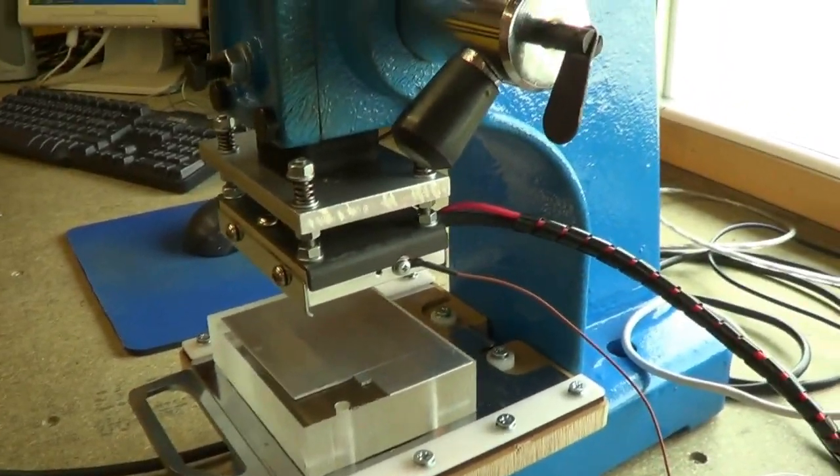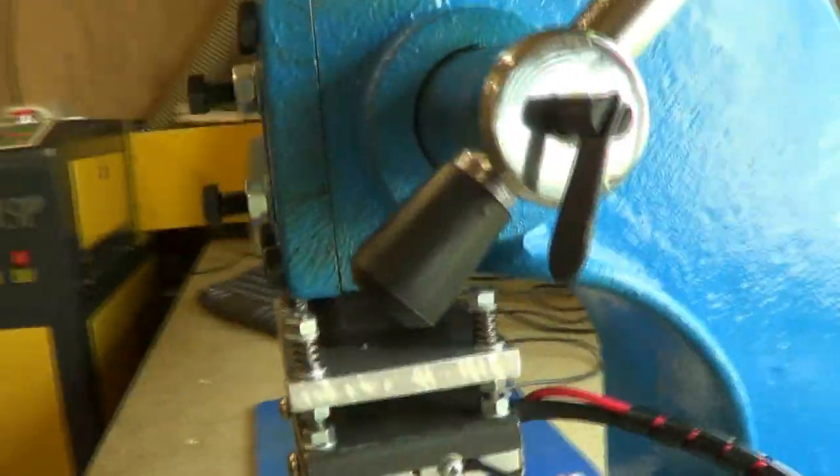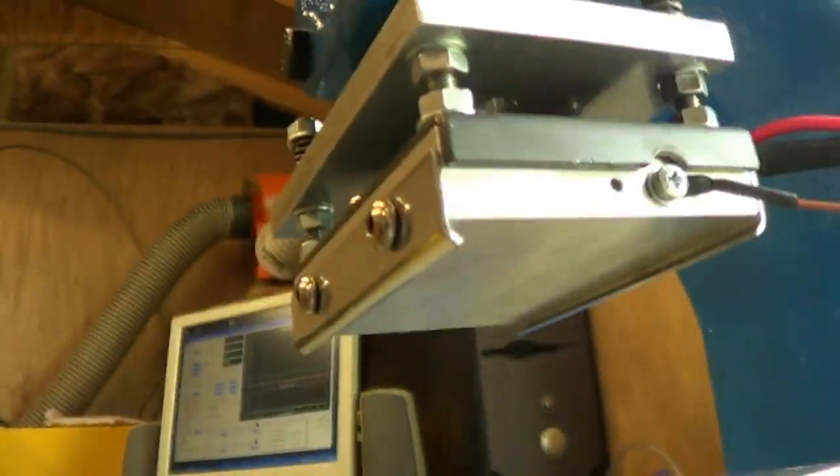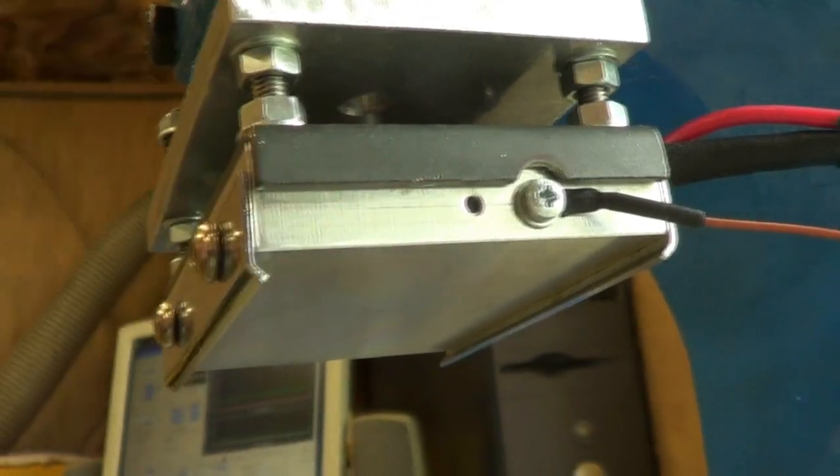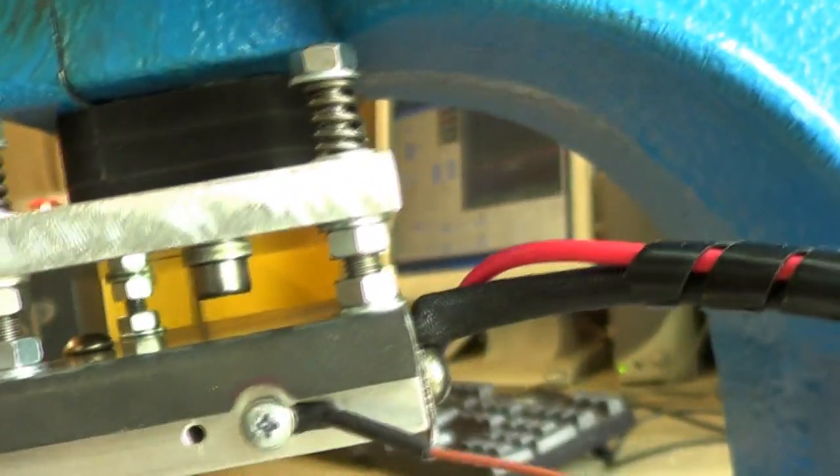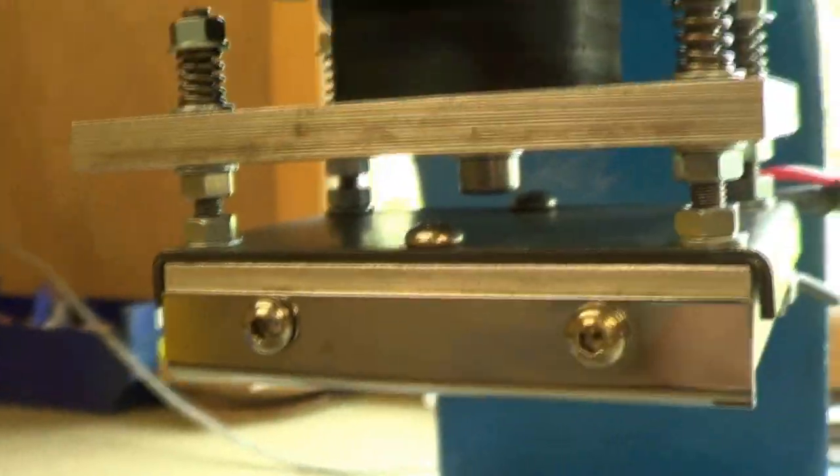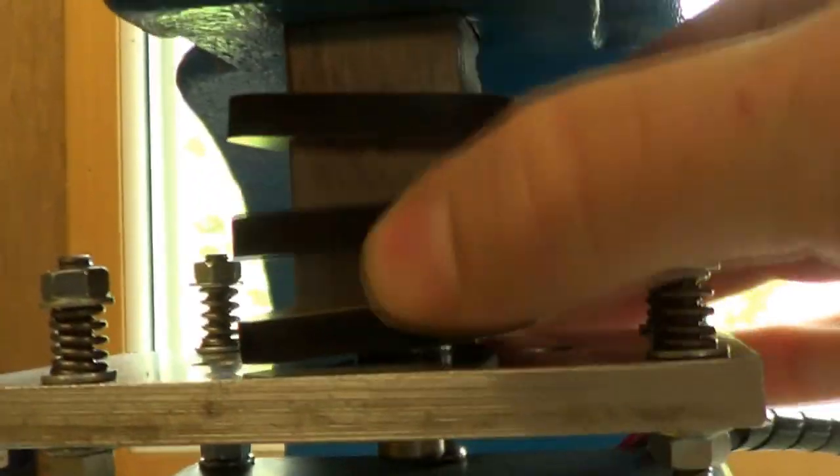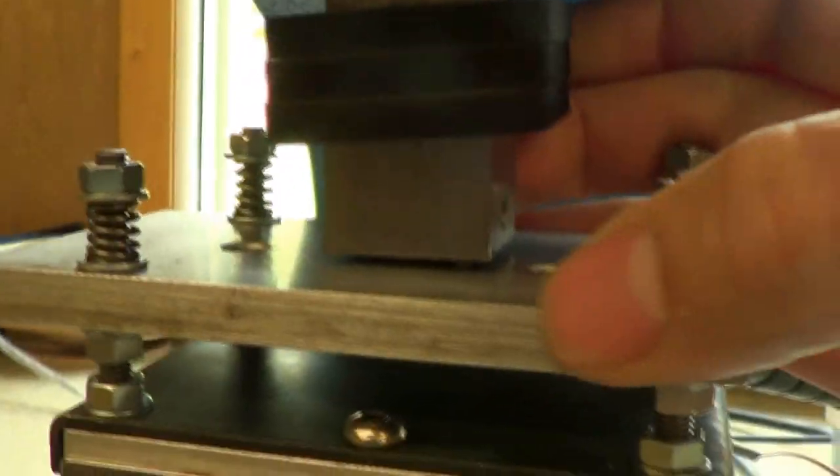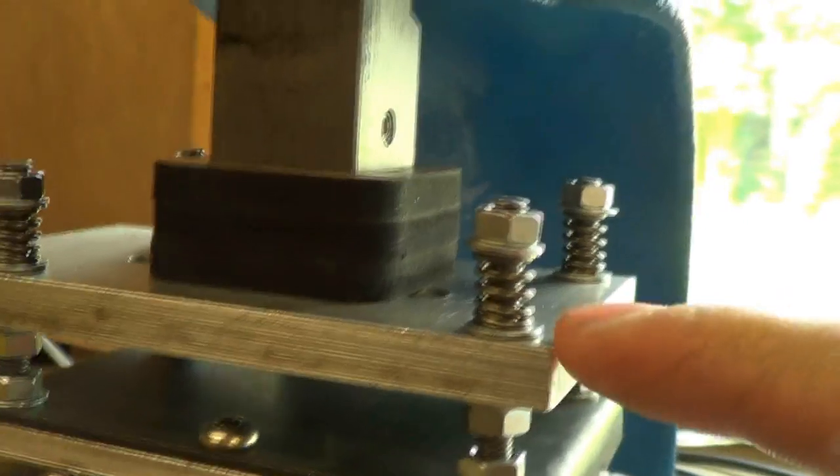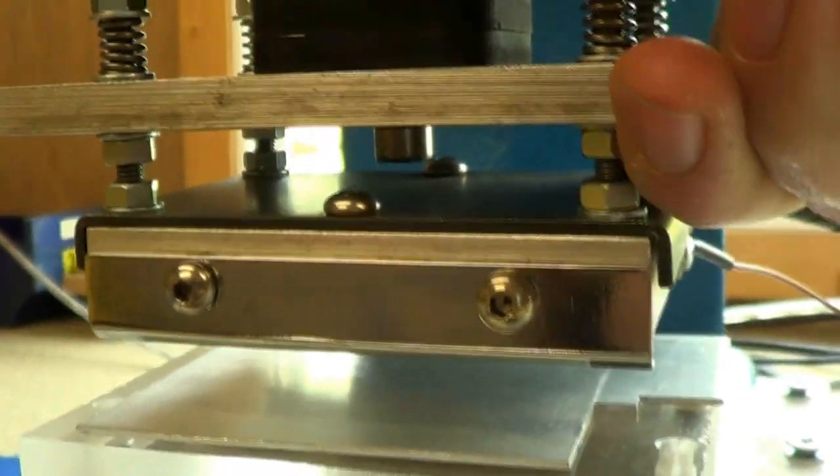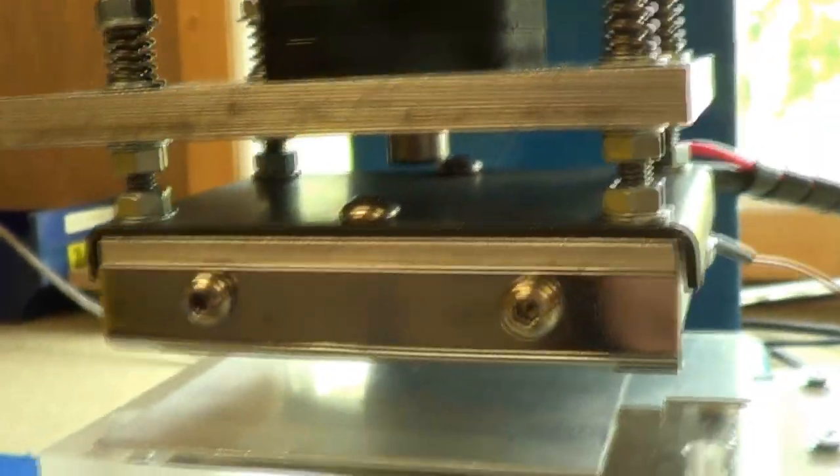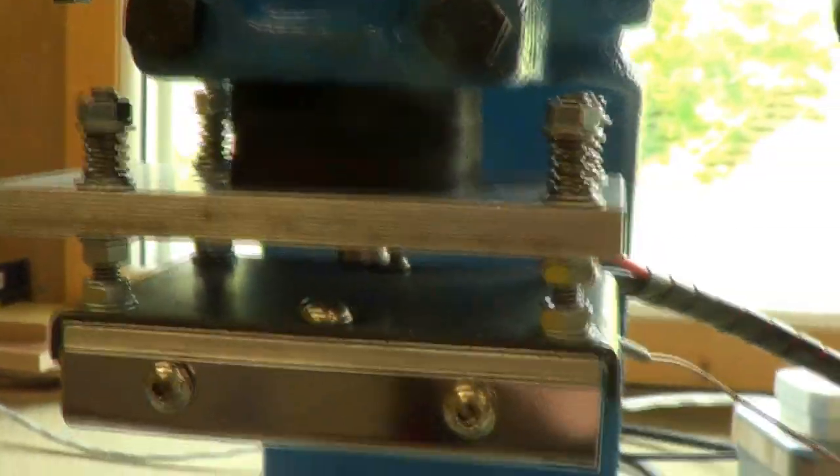So, looking at the heated platen first, there's a thick aluminium block here. Inside it there's a 100 watt ceramic heating element. Power connections out the back there. It is attached to the end of the ram. These are just spacers. The end of the ram via a metal plate here. And these four screws at the corners let you tip and adjust the entire heating element and plate. So you get a flat impression on the substrate.